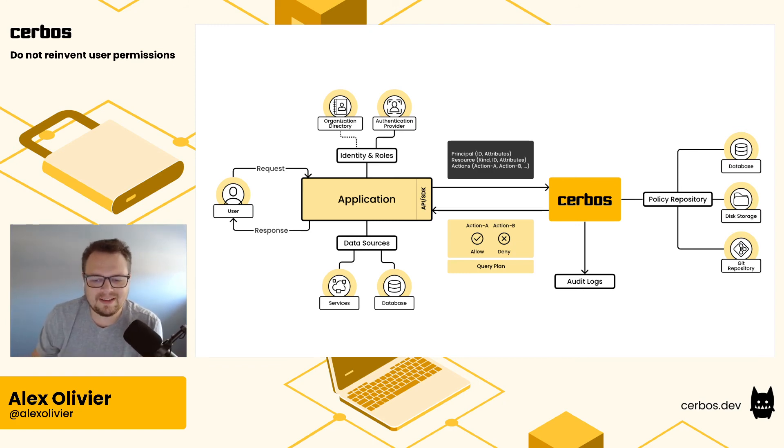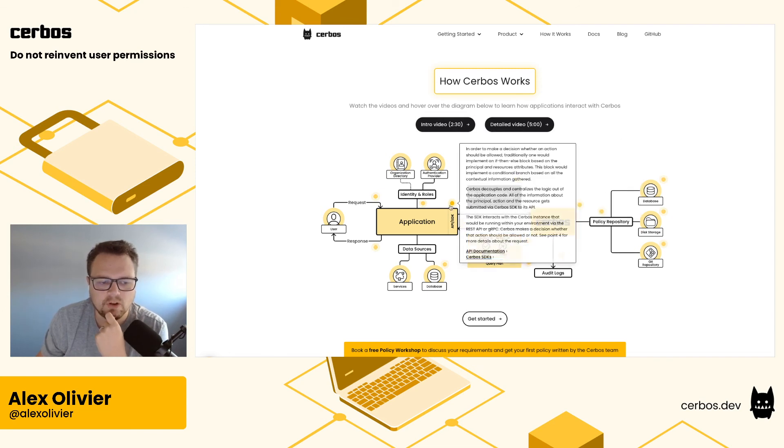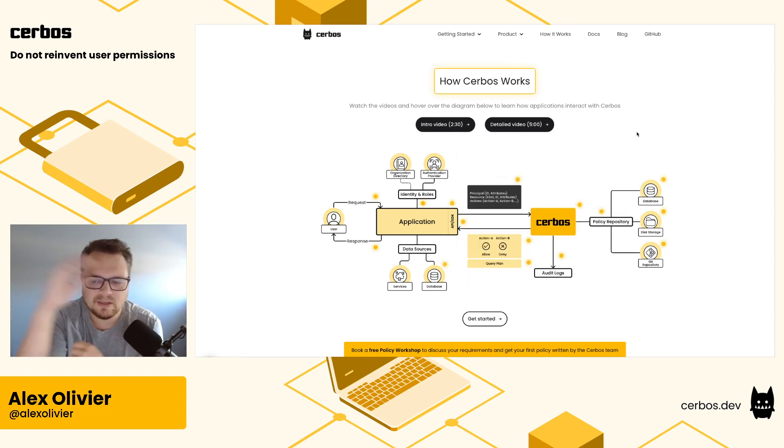So that was a quick run-through of exactly how Cerbos works. You can find this diagram along with much more detailed information about each step on cerbos.dev — just head over there and click the 'How It Works' link at the top. You can hover over each step for more information and links to resources. I hope you found this useful on your journey to implement authorization in your application and hopefully not reinvent the wheel. Come join our Slack community and check out the rest of our videos on our YouTube channel as we go through more detail of how Cerbos works and how to integrate it into your application.